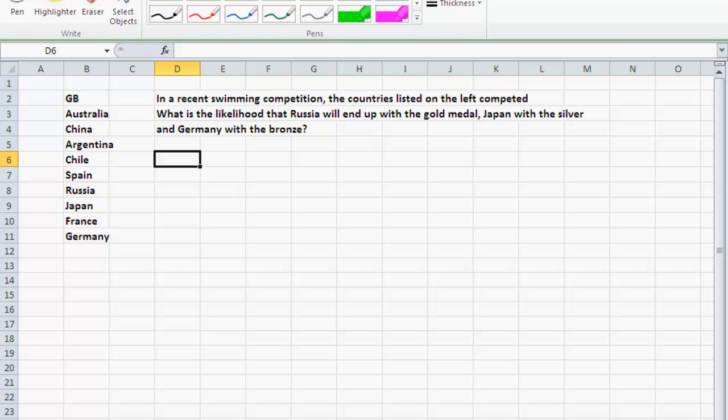Also, in this case, Russia cannot get both the gold medal and the silver medal. So the number of options that you have do not remain the same at every trial. Just as before, what will the sample space look like? Until I know how many possible outcomes I have in the sample space, I'm not in a position to compute the probability.